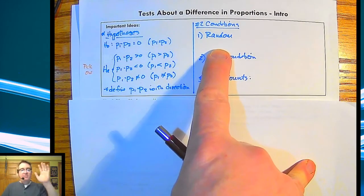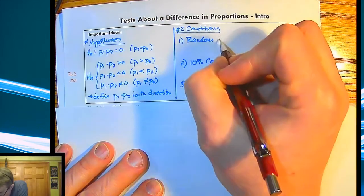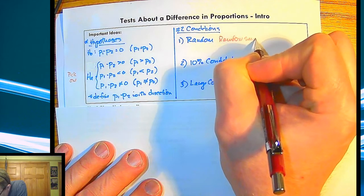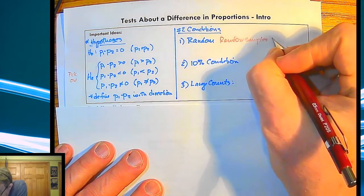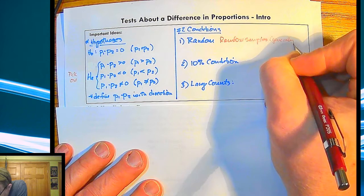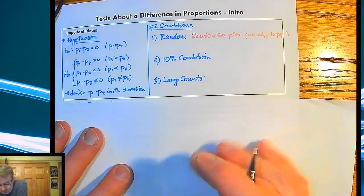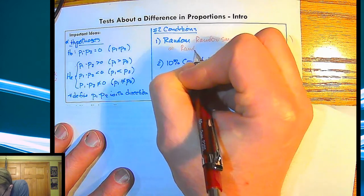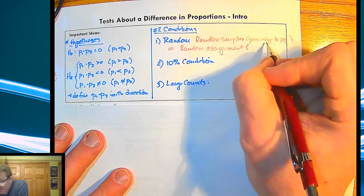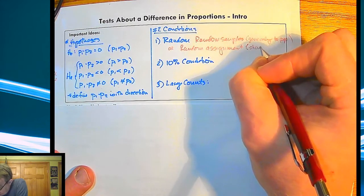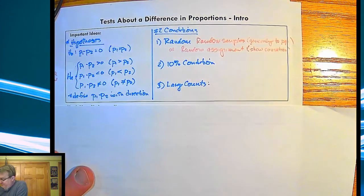Now, random. Because of how we're doing this, there are two different possibilities here. You can either have random samples, like we've been doing, and with proportions you'll get a lot of that because you're doing surveys or administering tests, that type of thing. So this is going to generalize to the population. Or what you could also do is have random assignment, which is what the Mythbusters did. And what that does, instead of generalizing out to the population, that's going to show causation.